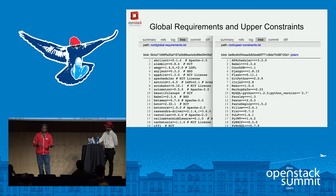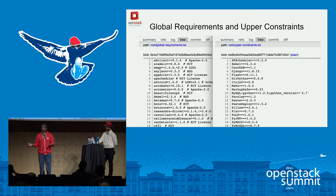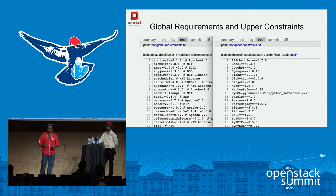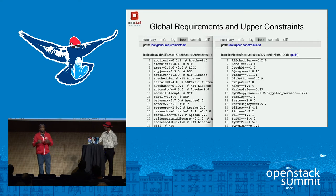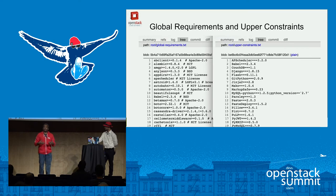So now we have these two files but we don't want to manage them manually — it's a huge task. For example, the upper constraints file we can run some jobs to calculate it, and the global requirements file we can run some jobs to publish reviews to each of the projects that want to adopt the global requirements. There are two files, we need to manage them and distribute the information to all the projects. The team that does this in an automated fashion and deals with exceptions is the requirements team.